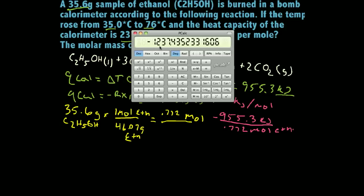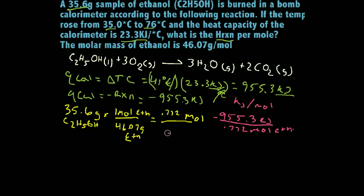All right, so we've got negative 955.3 kilojoules divided by 0.772 moles. That's going to equal negative 1,237 kilojoules per mole. We have three significant figures. So we'll just adjust that to 1.24. The 4 because we're rounding the 3 to the 4 because of the 7 times 10 to the 3 kilojoules per mole.